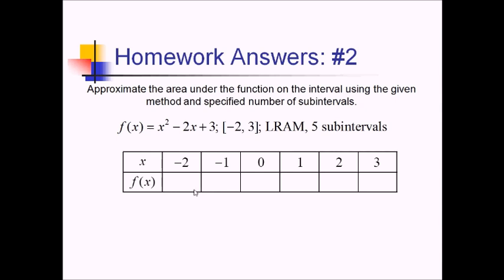Now I need to get the y values that go with that. This is going to be 4 plus 4 plus 3, so 11. And then next we've got 1 plus 2 plus 3, so that's going to be 6. Plug in 0, we just get 3. Plug in 1, that's going to be 1 minus 2, so negative 1 plus 3 is 2. If we plug in 2, we've got essentially 3. And then if we plug 3 in, we've got 9 minus 6 plus 3 is going to be 6.